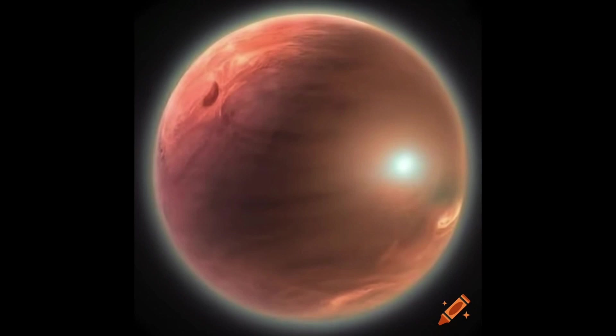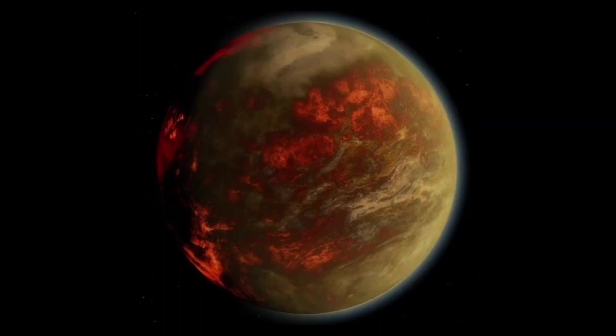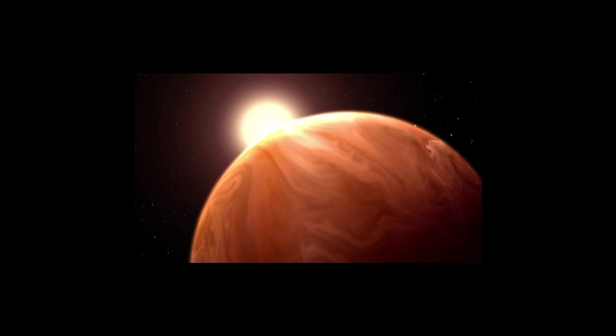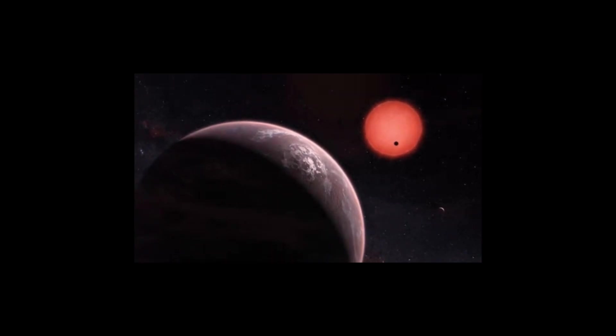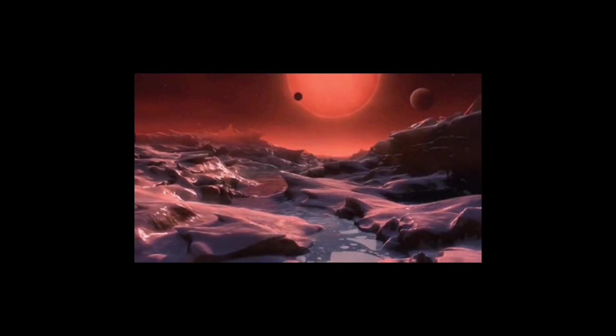GJ 436b is an exoplanet with hot ice, although its surface temperature is much higher than the boiling point of water. Many scientists concur that ice on this planet keeps its solid state due to the immense gravitational force pulling from the planet's core. The gravitational force increases with depth, preventing water from evaporating as it does on our world.